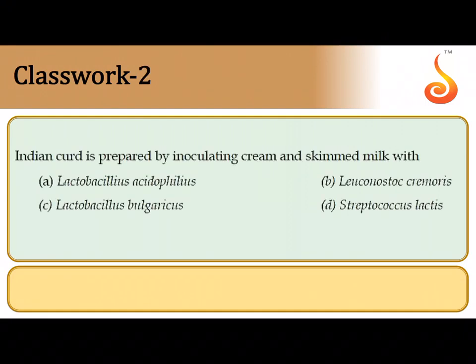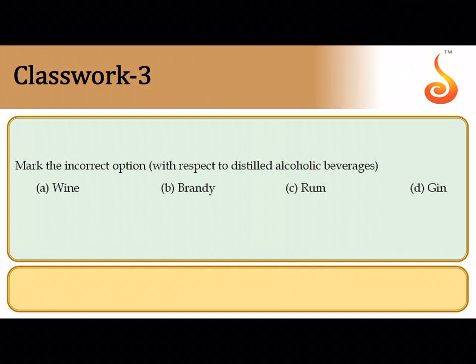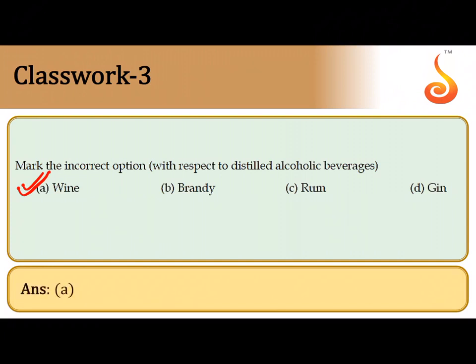Indian curd is prepared by inoculating cream and skim milk with bacteria. It can be more than one correct option — the answer is Lactobacillus acidophilus. Bulgaricus is also employed in making yogurt, but since the question says Indian curd, the more appropriate answer is Lactobacillus acidophilus. The third question asks to mark the incorrect option — most options are distilled alcoholic beverages, but wine is undistilled, so wine is the odd one out.